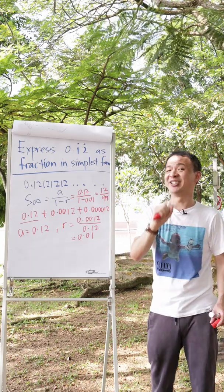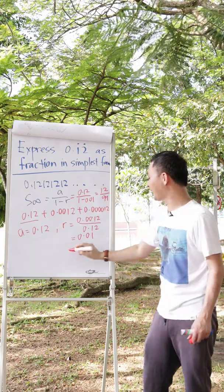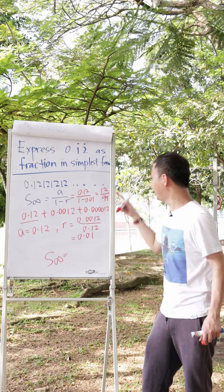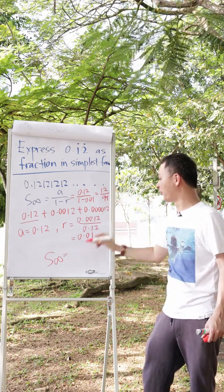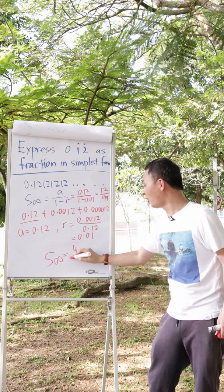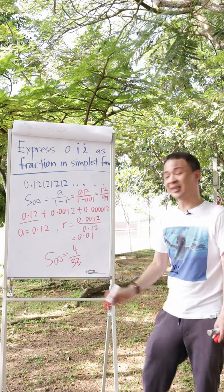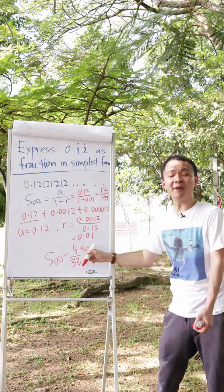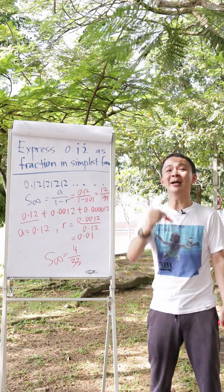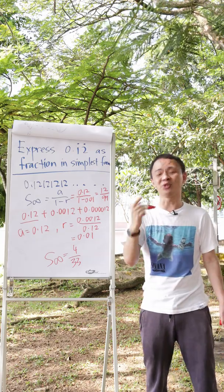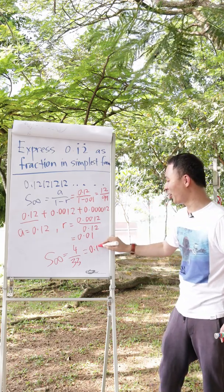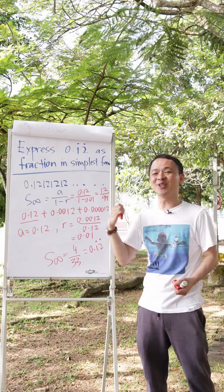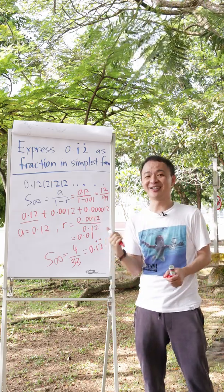This is not the simplest form because 12 and 99 can both be divided by 3. So in order to simplify them, I divide both by 3, giving 4 over 33. To verify, I type 4 over 33 into my calculator and it should show 0.1212121212. This is how we solve the recurring decimal.